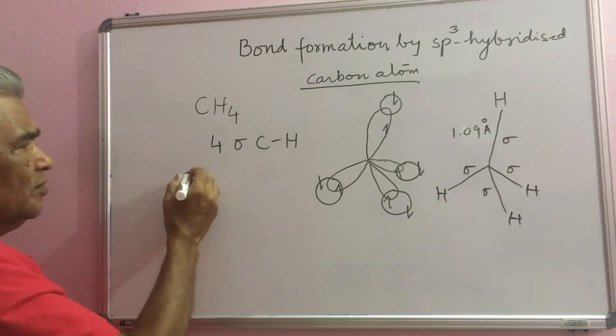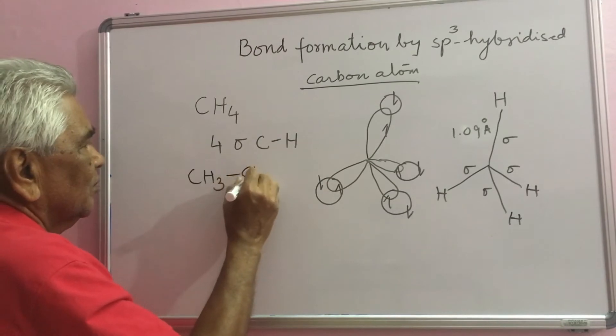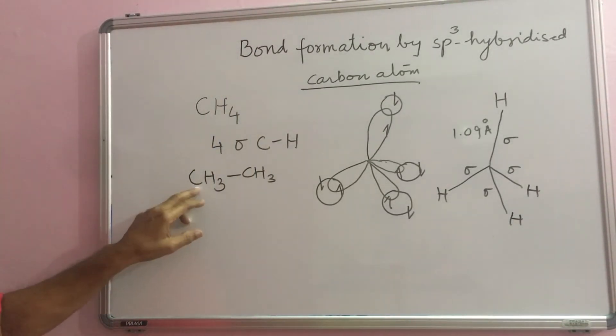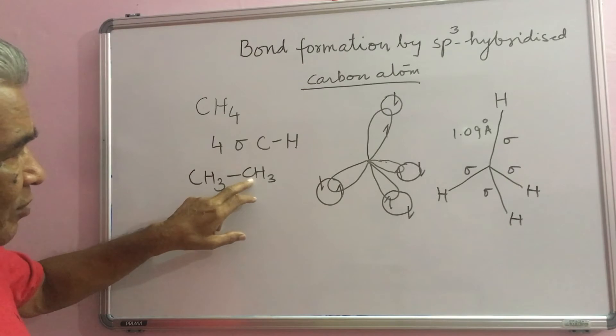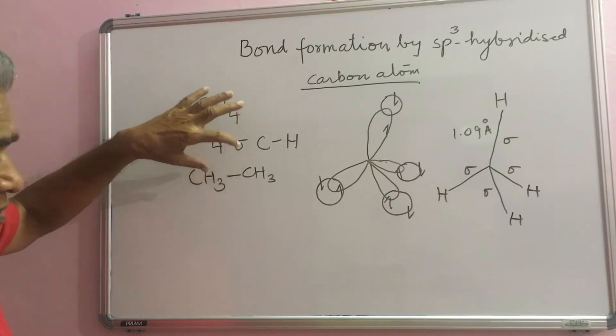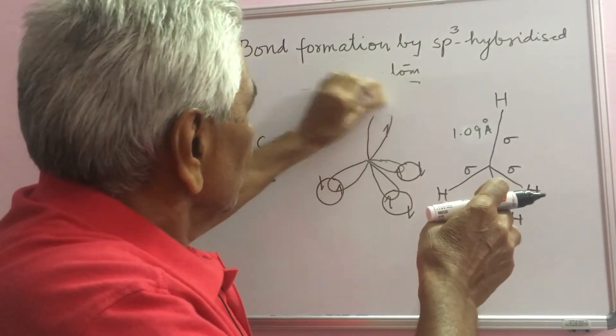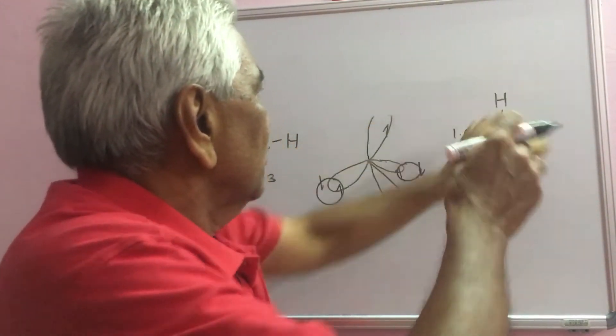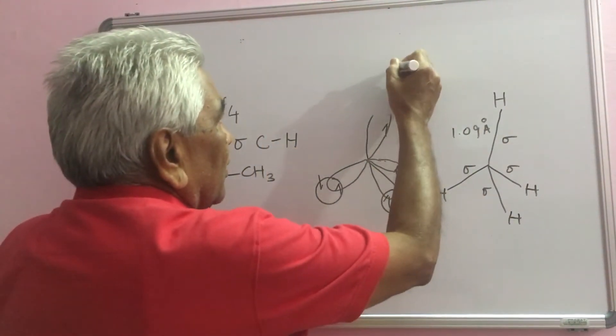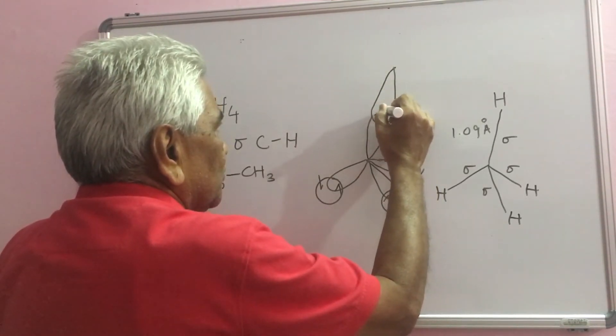Another case: ethane. This carbon is sp3 hybridized because it is attached to 4 atoms, 3 hydrogen and 1 carbon. This carbon again: 3 hydrogen atoms and 1 carbon. Both are sp3 hybridized.